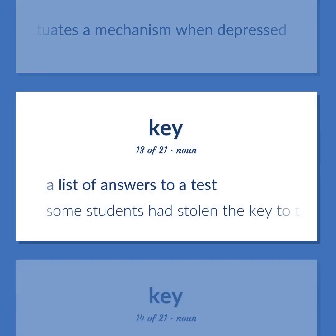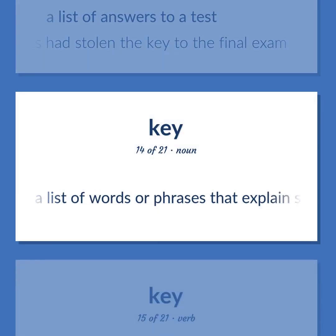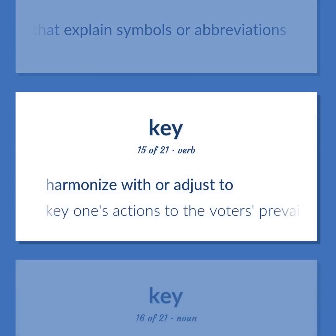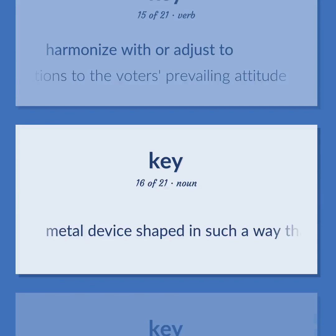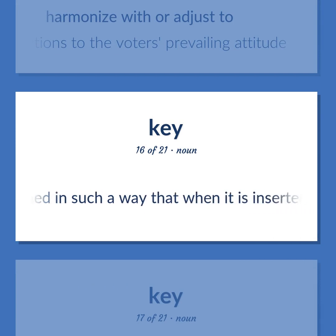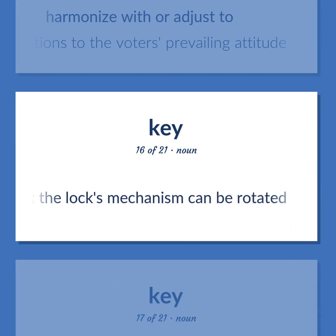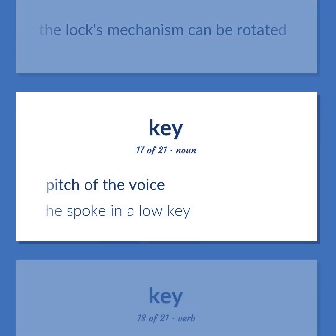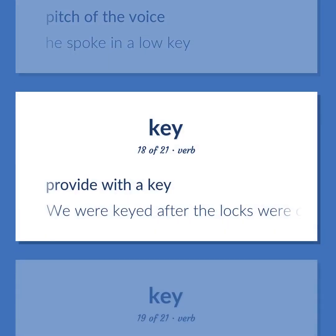Key: A list of answers to a test — 'Some students had stolen the key to the final exam.' A list of words or phrases that explain symbols or abbreviations. Harmonize with or adjust to — 'Key one's actions to the voter's prevailing attitude.' Metal device shaped in such a way that when inserted into the appropriate lock, the lock's mechanism can be rotated. Pitch of the voice — 'He spoke in a low key.'